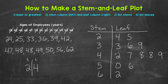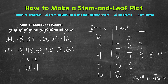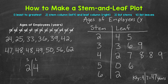So now what we can do is make a key, so that anyone looking at this will know exactly what the stems represent and what the leaves represent. All we need to do is take an example from the table and put what it equals. So we put 'Key' below the table, and let's use 47: a stem of 4 and a leaf of 7 equals 47 years. That shows that a stem of 4 and a leaf of 7 equals 47. Then lastly, I'm going to put a title up top: 'Ages of Employees' in years.